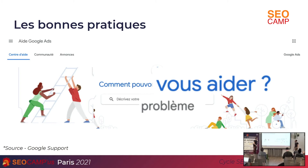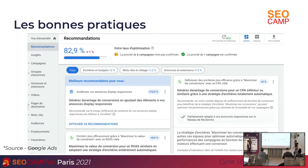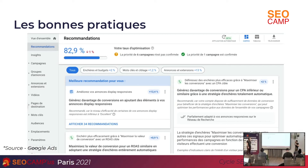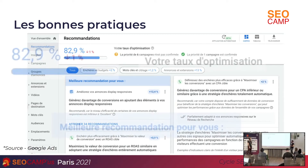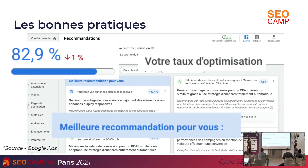On va monter une échelle pour vous et grâce à nous, vous allez aller plus loin, plus haut, plus fort. On a un autre moyen mis en place par Google, ça s'appelle les recommandations. Quand vous êtes dans l'outil Google Ads, ça se trouve en haut à gauche, c'est très visible, on ne peut pas les rater. Ce sont des conseils pour vous aider à améliorer votre compte avec un système de scoring.